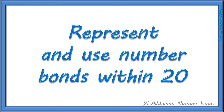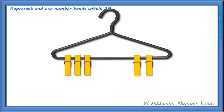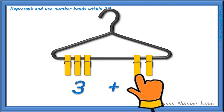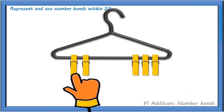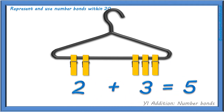Hello! In this video we are going to look at how we can represent number bonds to and including 20. In our previous video, representing number bonds to 10, we used a coat hanger and clothes pegs to demonstrate that addition calculations can be done in any order. Such as in this example where 3 add 2 equals 5 and 2 add 3 equals 5. So, when adding numbers the calculation can be done in any order.